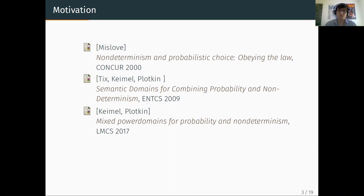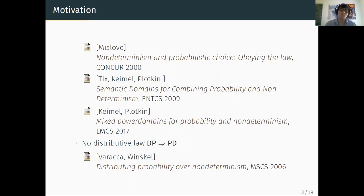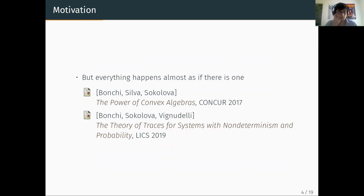People have tried for a long time to model systems using both of these monads, combining non-deterministic choice and probabilistic choice. There is work from Misloff, Tix, Kamel, and Plotkin about this. But it was proved in 2006 that there is no distributive law from DP over PD, meaning there is no systematic way using the theory of distributive laws of John Beck to get abstract results by combining these two monads.